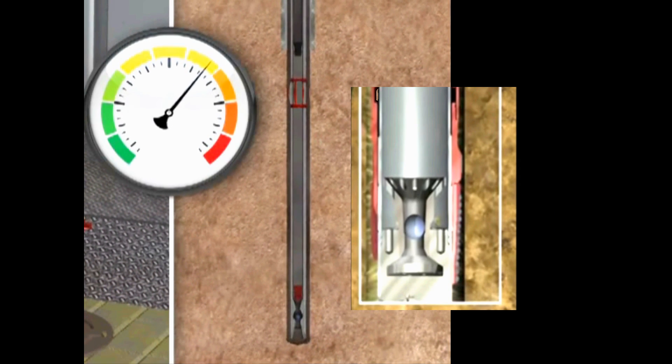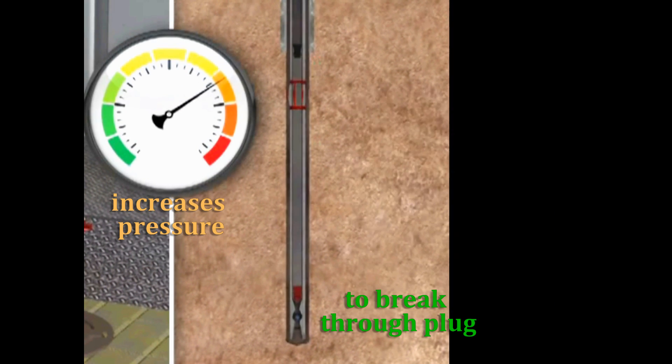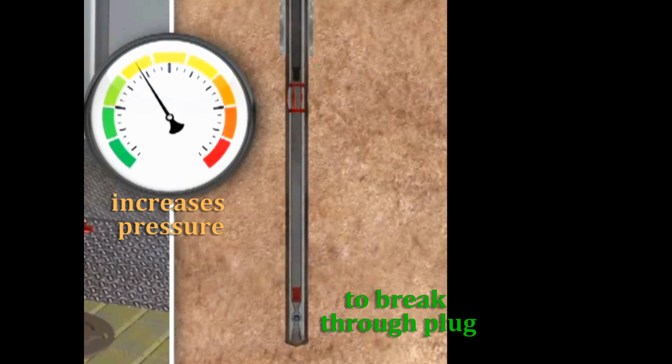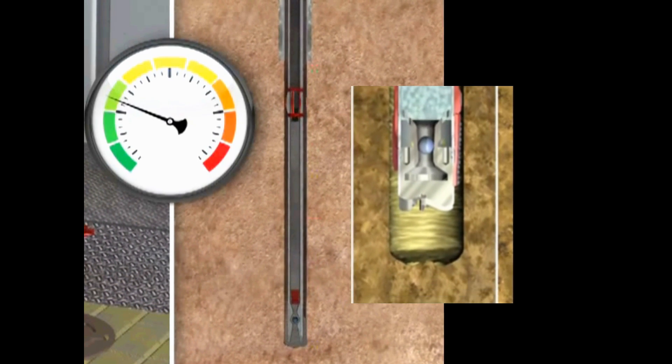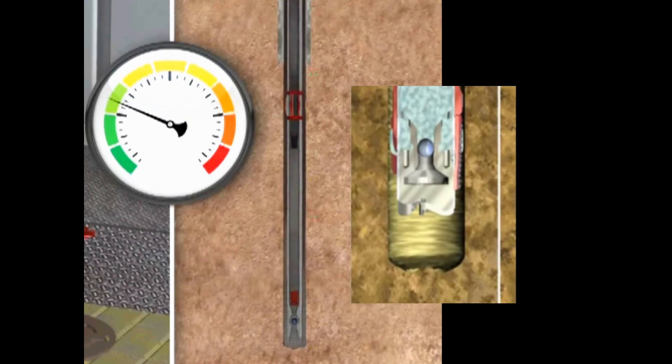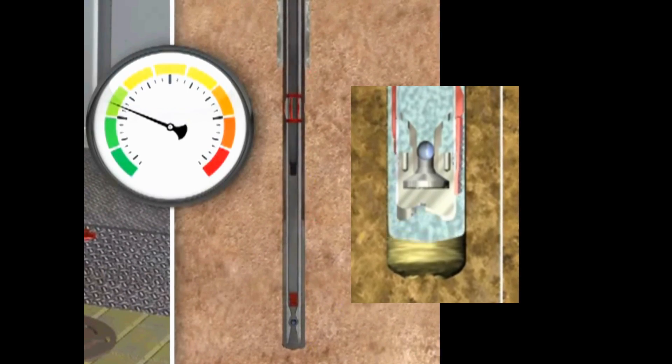Once in place, the driller slightly increases the well pressure to break through this rupture plug. Once the plug is broken, the cement slurry displaces the existing mud in the annulus.